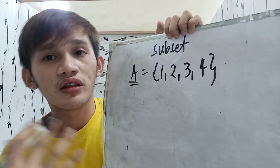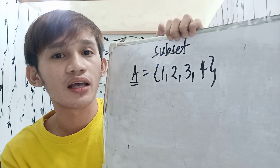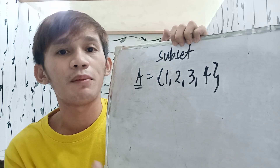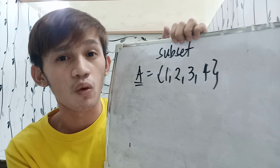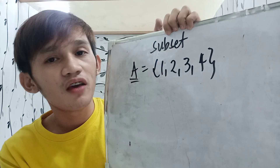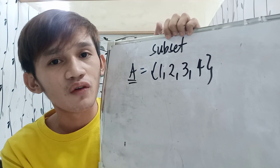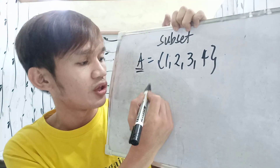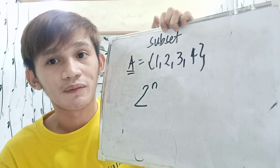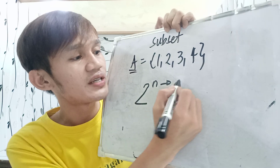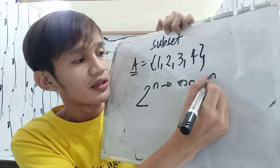In the previous video, I taught how to get all the subsets with 1 element, with 2 elements, with 3 elements, with 4 elements, and so on. But this time, if you are asked to give the total number of subsets of a given SET, you simply use the formula 2 raised to N, where N represents the number of elements.